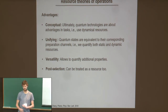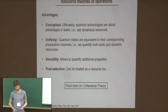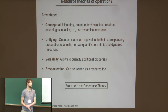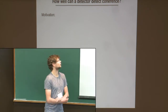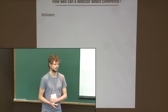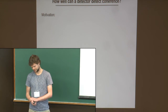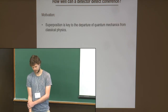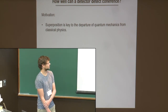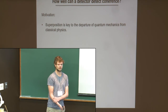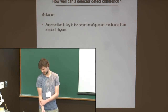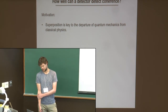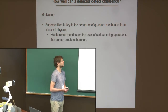Until here this was valid for every resource theory on the level of operations. From here on I will focus on coherence theory, and particularly on the question of how well a detector can detect coherence. The first point is to answer why this question is interesting at all. I hope most of you agree that superposition is key to the departure of quantum mechanics from classical physics, and that is the reason why coherence theories on the level of states were developed — they quantify superposition.